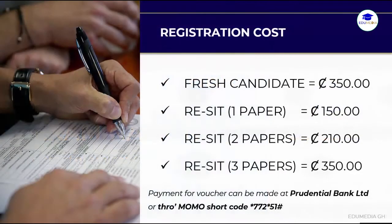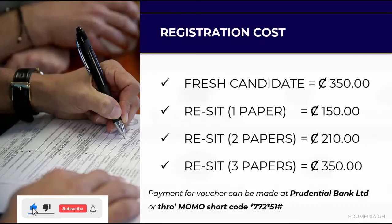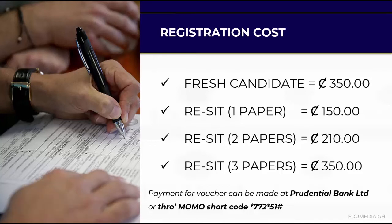The cost of the examination is 350 cedis for fresh candidates and those sitting for three papers. This has been increased compared to 2021. For those sitting for one paper, the cost is 150 cedis — maintained from last year. For two papers, the cost has been reduced to 210 cedis. So: fresh candidates pay 350 cedis, one paper is 150 cedis, two papers is 210 cedis, and three papers is 350 cedis.